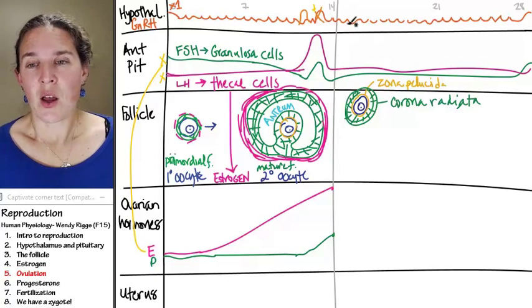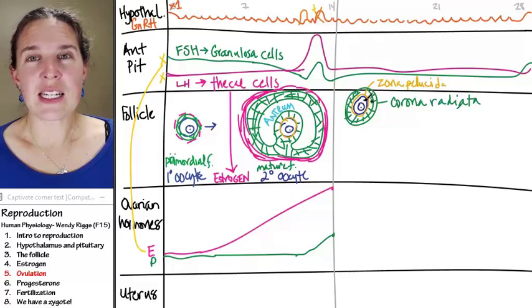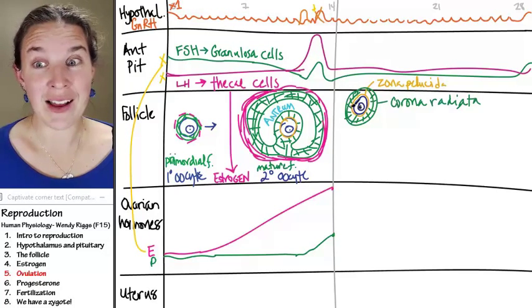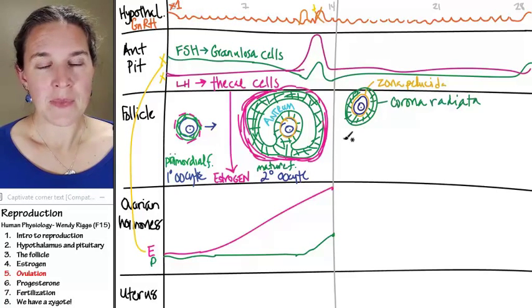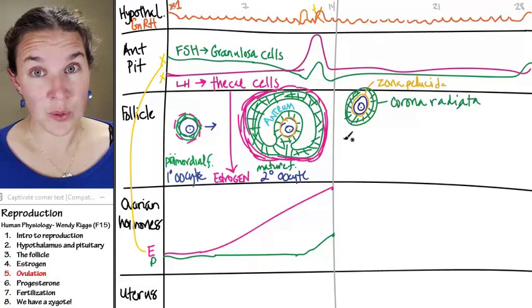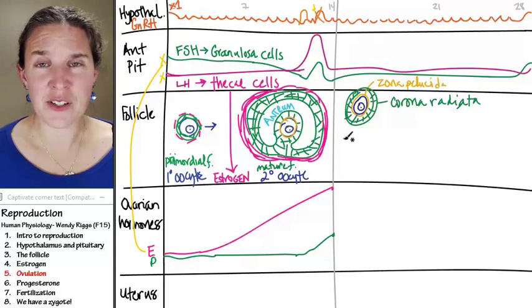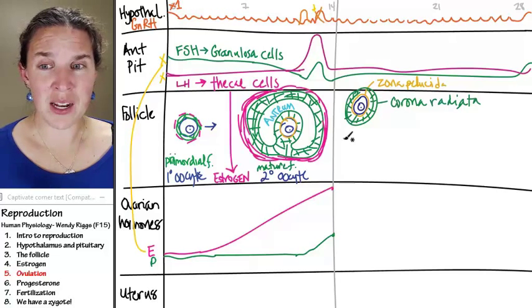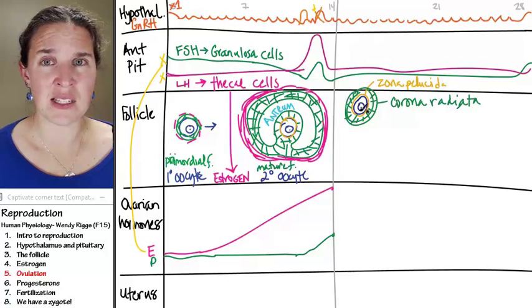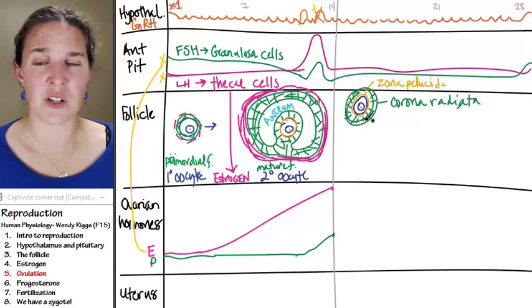All right. Well, we definitely need to keep track of the fact that the whole point of this entire thing was ovulating this guy and now creating an environment that's friendly to sperm because this guy is only going to live for 24 hours. So the sperm better get there fast or else they're going to miss their chance at fertilizing this egg.